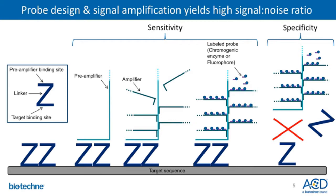Labeled probes contain either a chromogenic or a fluorescent enzyme that generates a signal detectable under a standard bright-field or fluorescent microscope. This signal amplification strategy yields high sensitivity and allows for visualization of target RNAs as a single dot, where each dot represents an individual RNA molecule that can be quantified. Background is eliminated because the signal is dependent on two Zs binding next to each other on the target sequence. If both Zs do not bind next to each other, the preamplifier cannot form a stable hybridization and the amplification tree does not get built, generating little to no background signal. A standard RNA Scope probe consists of 20 Z-pairs, though a minimum of only three Z-pairs is needed to generate enough signal for molecular detection, ensuring a high signal-to-noise ratio.